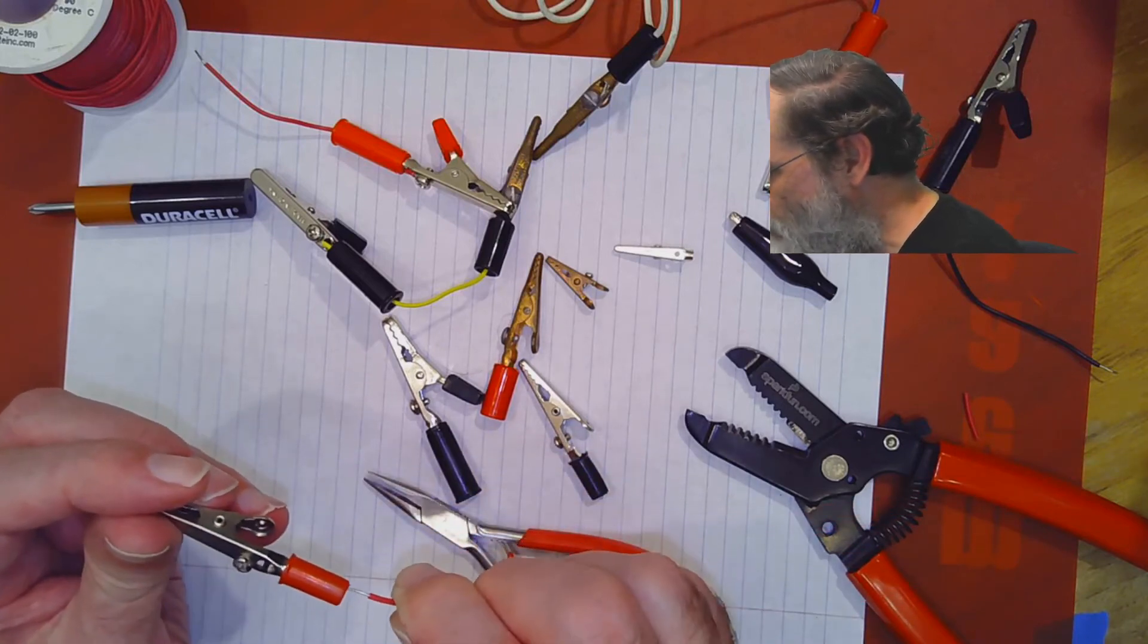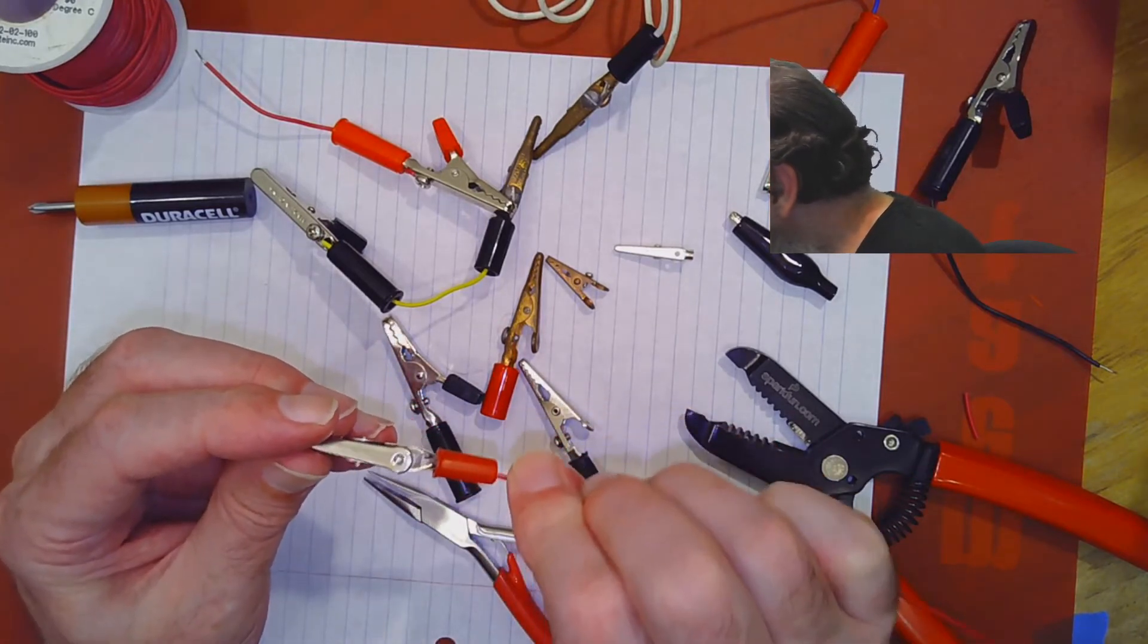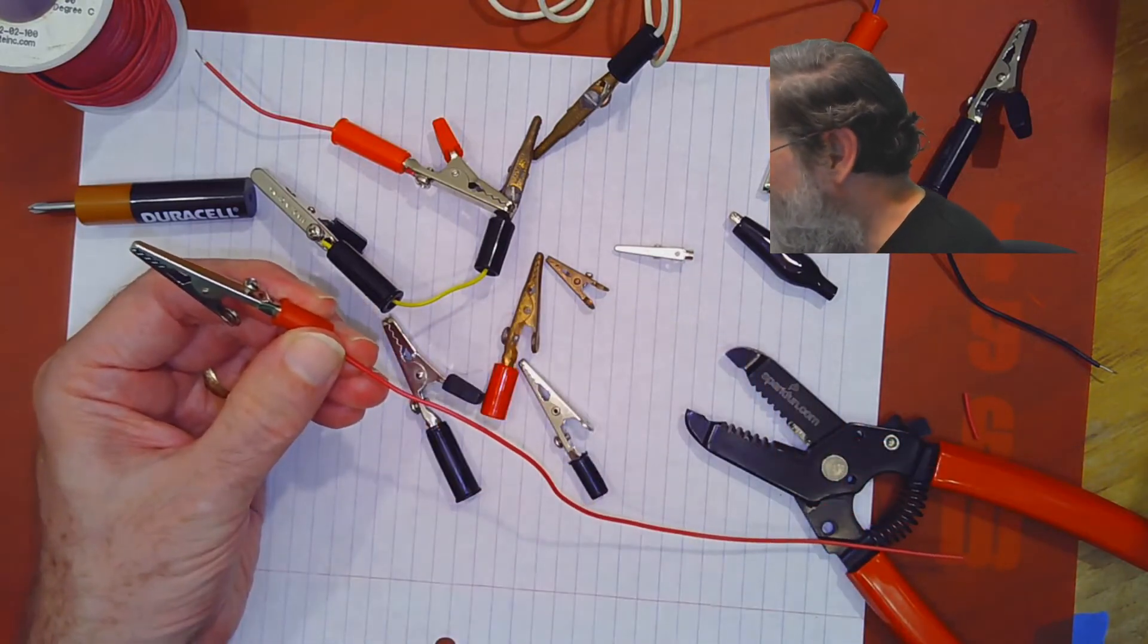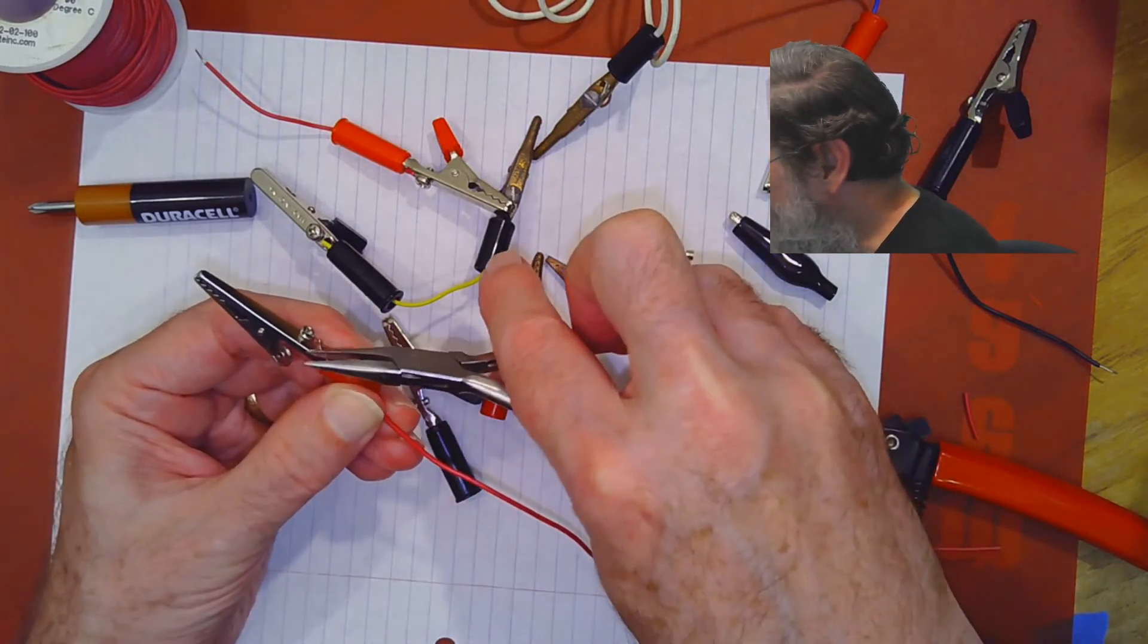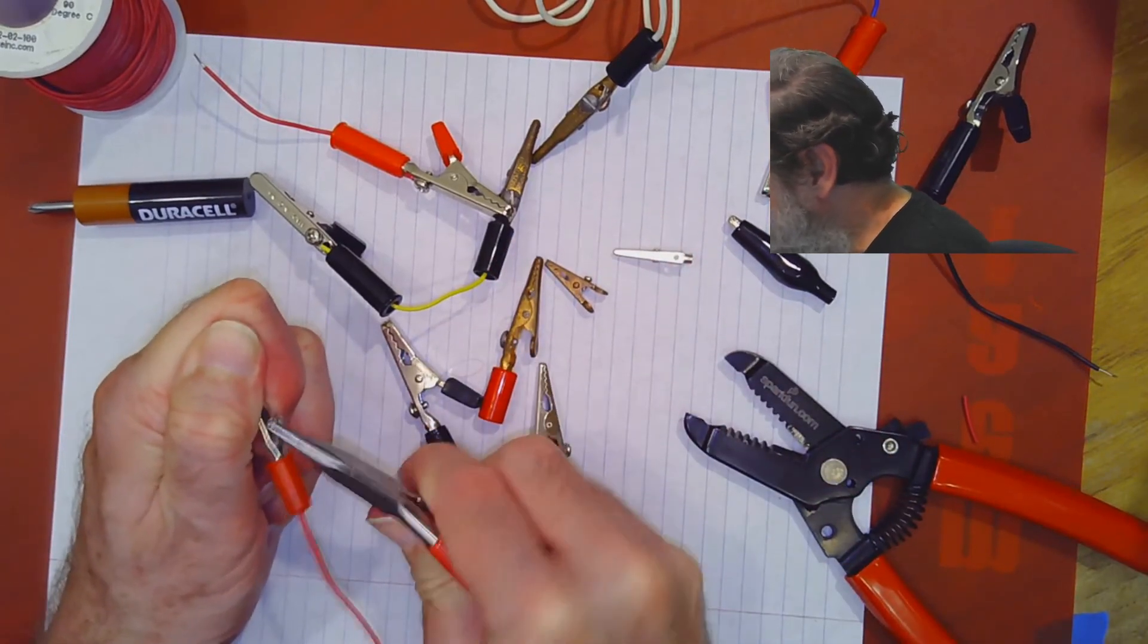Feed it through the hole so it's far enough through that you can grab it with a pair of pliers and pull it the rest of the way.